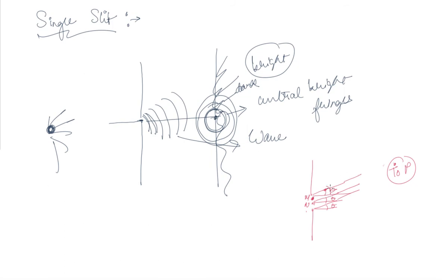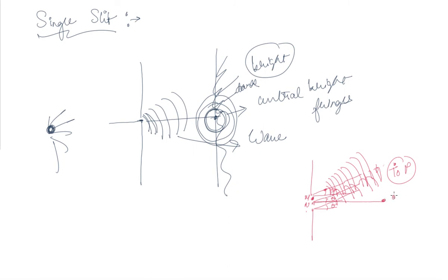This acts as a secondary source of light, and by using Huygens' principle we can understand that a secondary wavelet has been generated. Similarly, each point generates a secondary wavelet, and these also undergo interference. At the center, theta equals zero, which is the point of the central bright fringe.